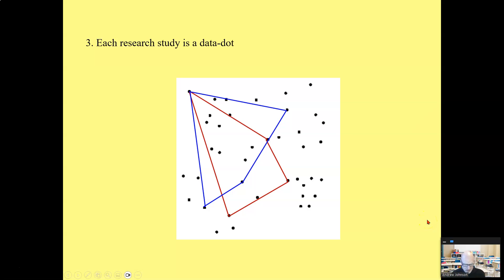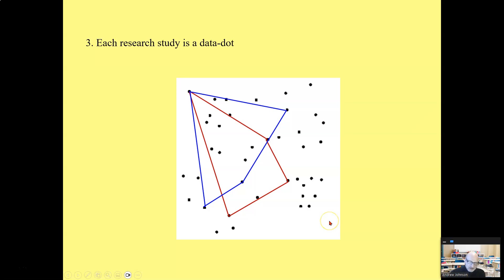This is where research comes in. Each research study is like a dot in a grand dot-to-dot picture. Research connects the data dots. Different theories connect different data dots differently. This is why you can have two or three or more theories describing a thing, and each one can be research-based.